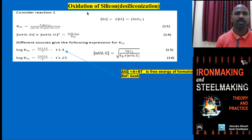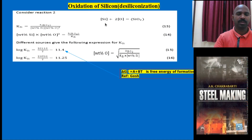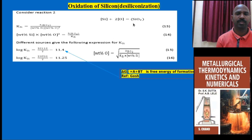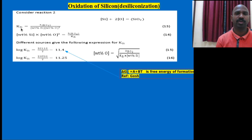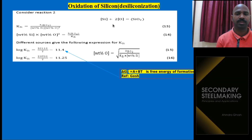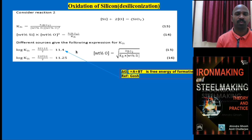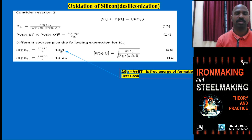Now let me talk about oxidation of silicon, which is nothing but desiliconization. Silicon in the molten steel after primary steelmaking reacts with dissolved oxygen to form SiO2, going out in the form of slag. When you apply Henry's law and Raoult's law, you can rewrite the equilibrium constant of silicon as A of SiO2 divided by weight percentage of silicon times weight percentage of oxygen squared. These are the two free energy values in the form of A plus BT from different thermodynamic textbook references.